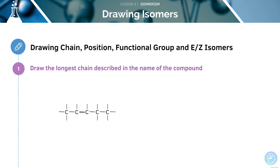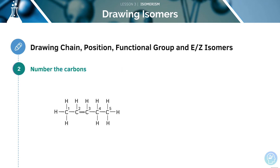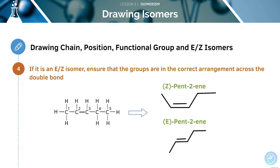To draw these forms of isomers, we need to draw the longest chain described in the name of the compound. Then we can number our carbons and add the functional groups to the carbons described in the name. If it's an EZ isomer, we should ensure that the groups are in the correct arrangement across the double bond.